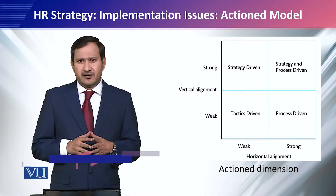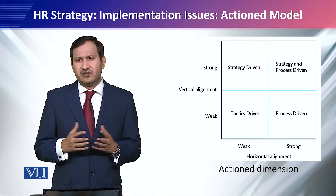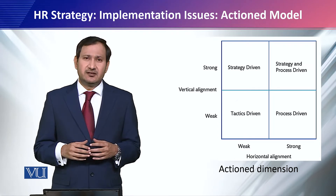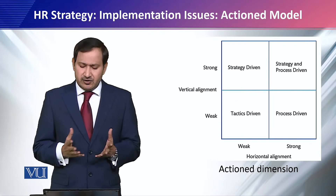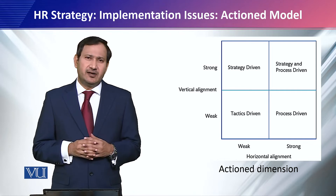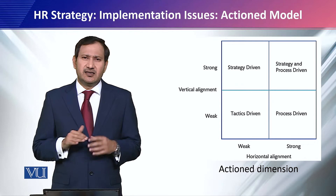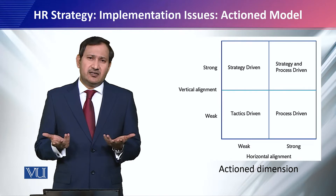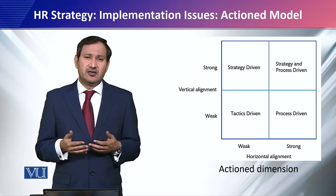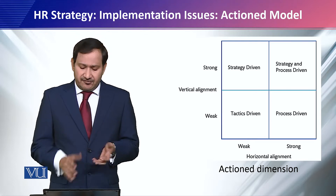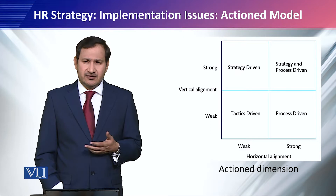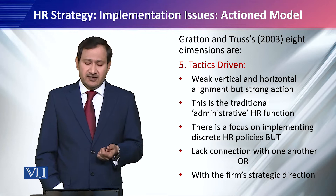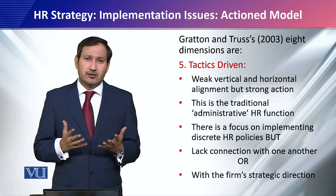If you look at this 2x2 matrix, you may realize that it is very similar to what we discussed in the last module. But remember that at the bottom, we have mentioned the action dimensions. In this 2x2 matrix, you can see there is vertical alignment on the left axis and horizontal alignment on the horizontal axis. A strategy is either horizontally aligned, vertically aligned, both, or neither. We will look at these dimensions in some detail, with further description available in the notes and textbooks.